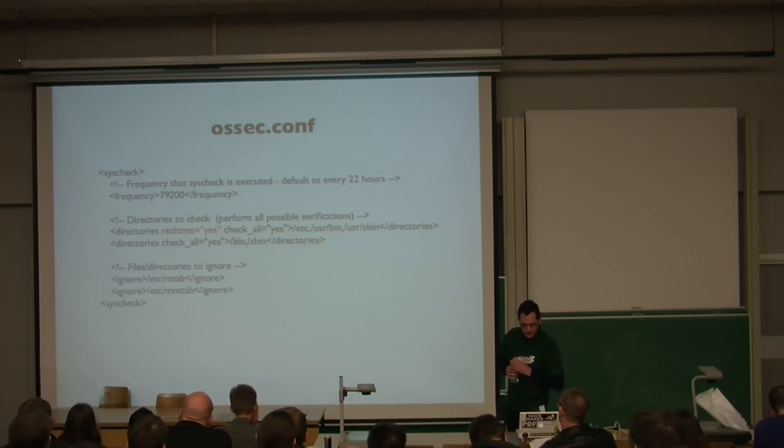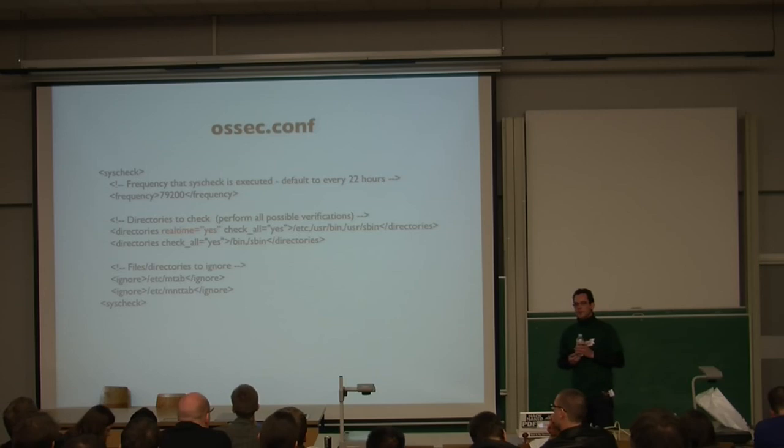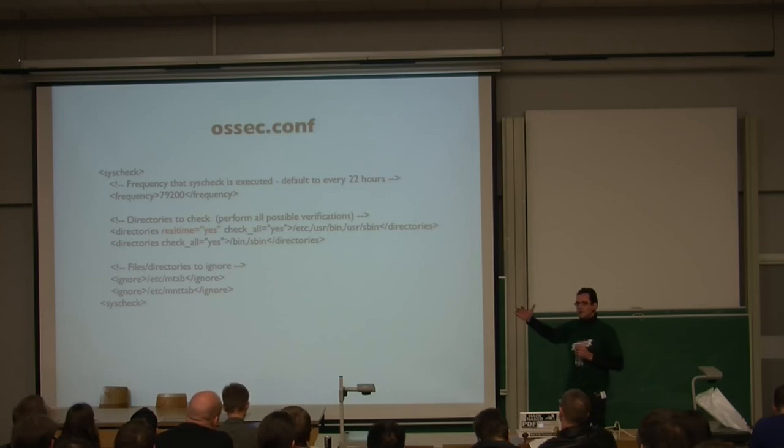For integrity checking, OSSEC.conf is the basic configuration file where you do all the configuration for your host. In the syscheck section, you just define which directories you want to include to have the integrity checking. It's very important. For me, if I configure it on systems, I always take the lowest or the highest in the hierarchy and then you're going to exclude lower in the hierarchy. Because if you do the monitoring too high, you might miss something. You can still exclude files or directories that you don't want to monitor. And those are mainly files and directories that you know change a lot. You don't want to have alerts thrown on those.